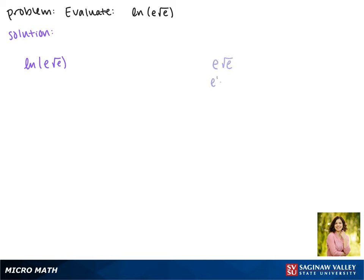This is the same as e to the first times e to the 1 half. Our exponent rules say we add these together, giving us e to the 3 halves power.